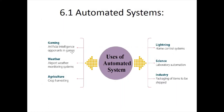For example, automated systems are used in gaming — by use of AI, opponents are generated in games, also known as bots, so that a player can play against them. They are used in weather reports and airport weather monitoring systems to generate threat assessments for flights. In agriculture, automated systems are used to harvest crops. In lighting or home control systems, they automatically turn lights on and off.